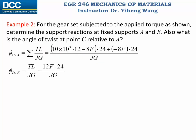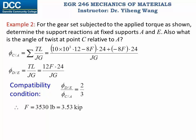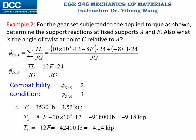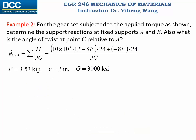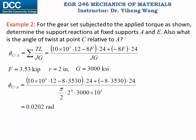Now we have both angles of twist expressed in terms of F. Applying the compatibility condition that their ratio is 2 to 3, we can solve for F = 3.53 kip. Since TA and TE were both expressed in terms of F, we can now solve for TA and TE — these are the support reactions we are looking for. Substituting into the angle of twist equation gives the angle of twist at point C as 0.0202 radians, completing the problem.